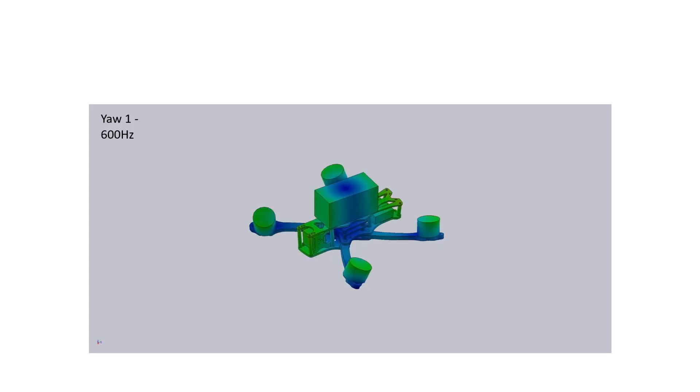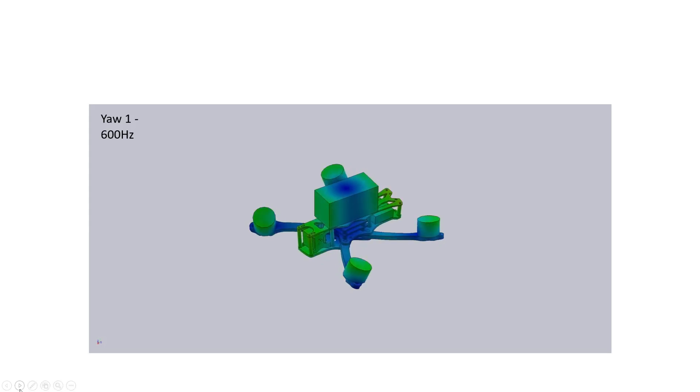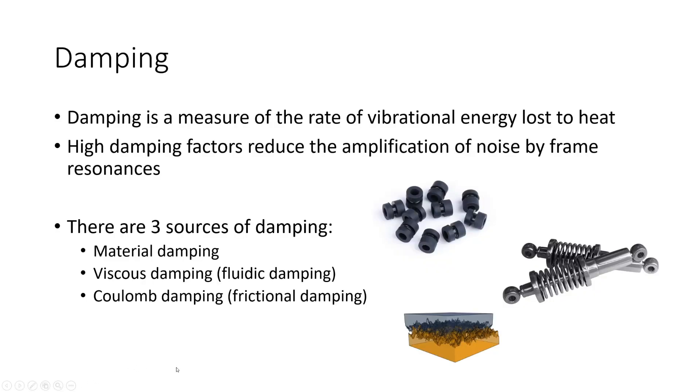So now that we've looked at the black box logs and we've looked at the mode shapes, we have to ask ourselves these mode shapes are pretty similar to the mode shapes that we have seen with other quads of a similar layout. They're occurring at not dissimilar frequencies. So why is the Apex looking so much better on black box logs? And there is really just one reason for that I believe and that reason is damping.